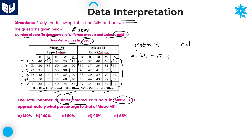Coming to Metro M, the same silver color. Silver total: 5 plus 5 is 10, plus 2 is 12. Units place 2. 5 plus 1 is 6, plus 3 is 9, 13, 16, 16, 18, and 19. Total is 192. So Metro H silver total is 173 and Metro M silver total is 192.